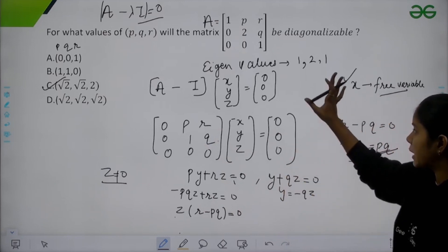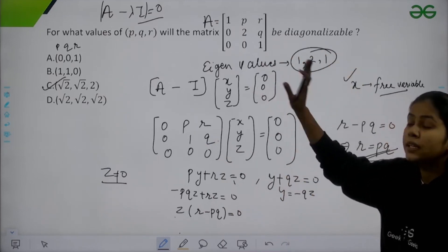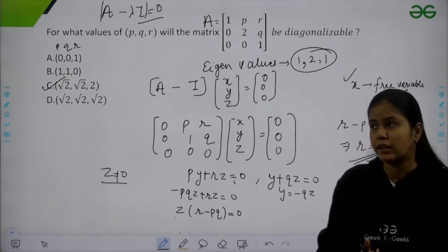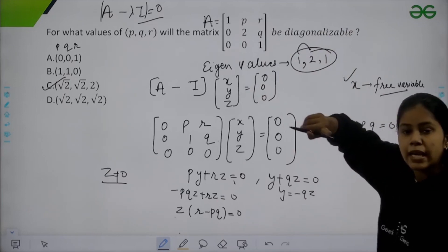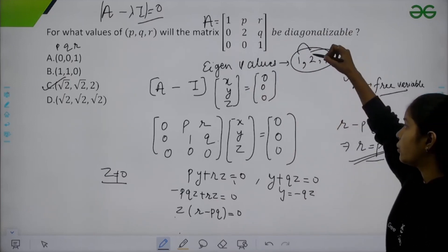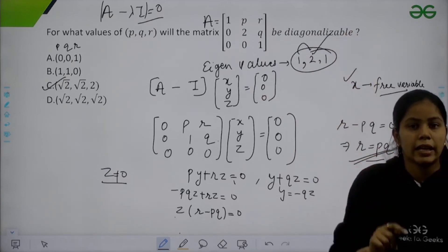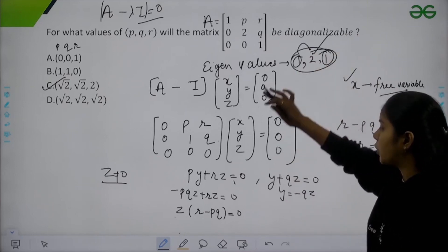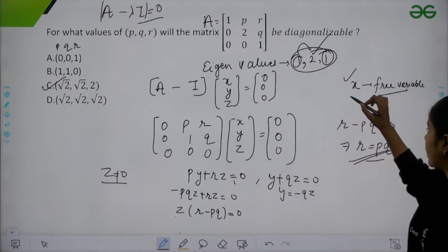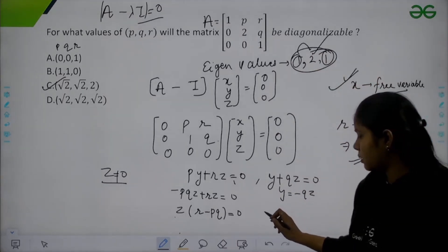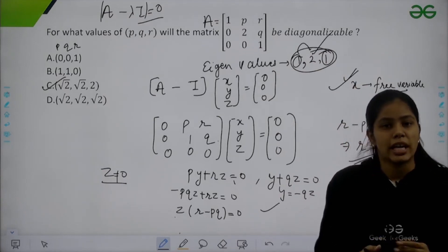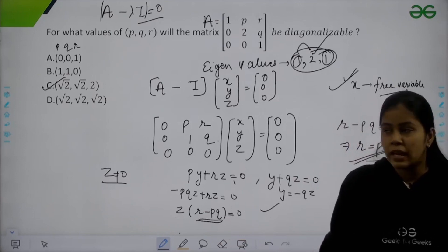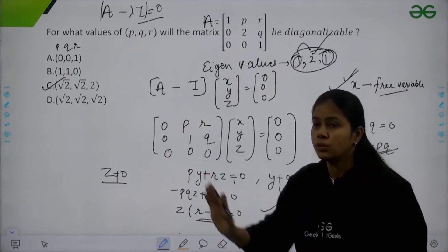The key takeaway is that for diagonalizability we need three distinct linearly independent eigenvectors. For distinct eigenvalues we always get independent eigenvectors, so we don't need to check for eigenvalue 2. We only need to find eigenvectors for eigenvalue 1, giving one from the free variable x and another from y and z — requiring the condition R = P·Q to hold.